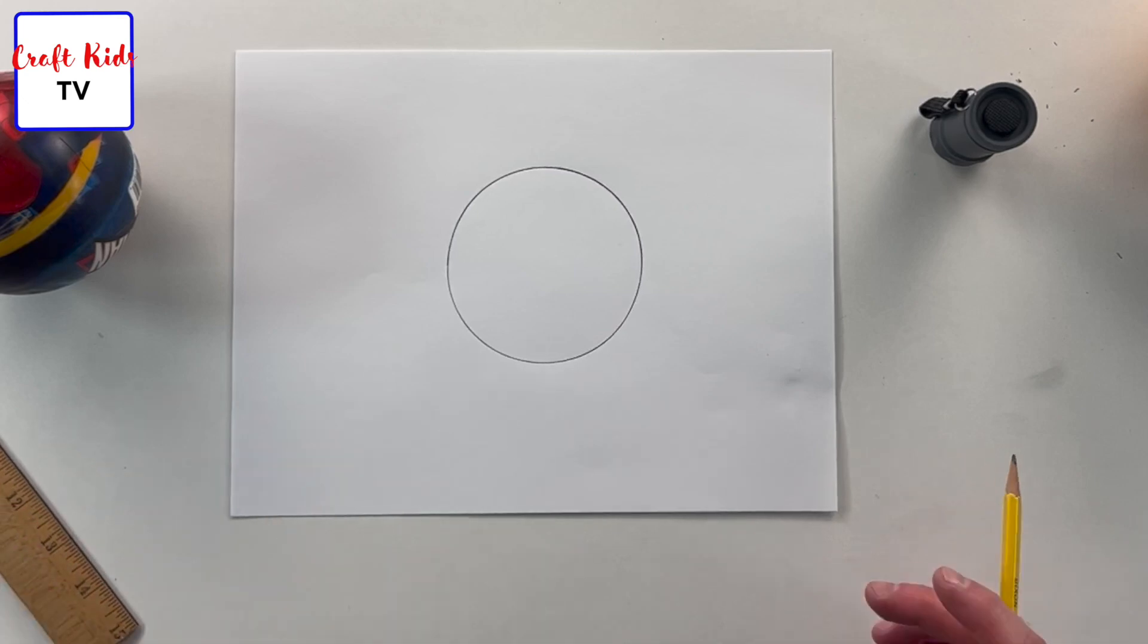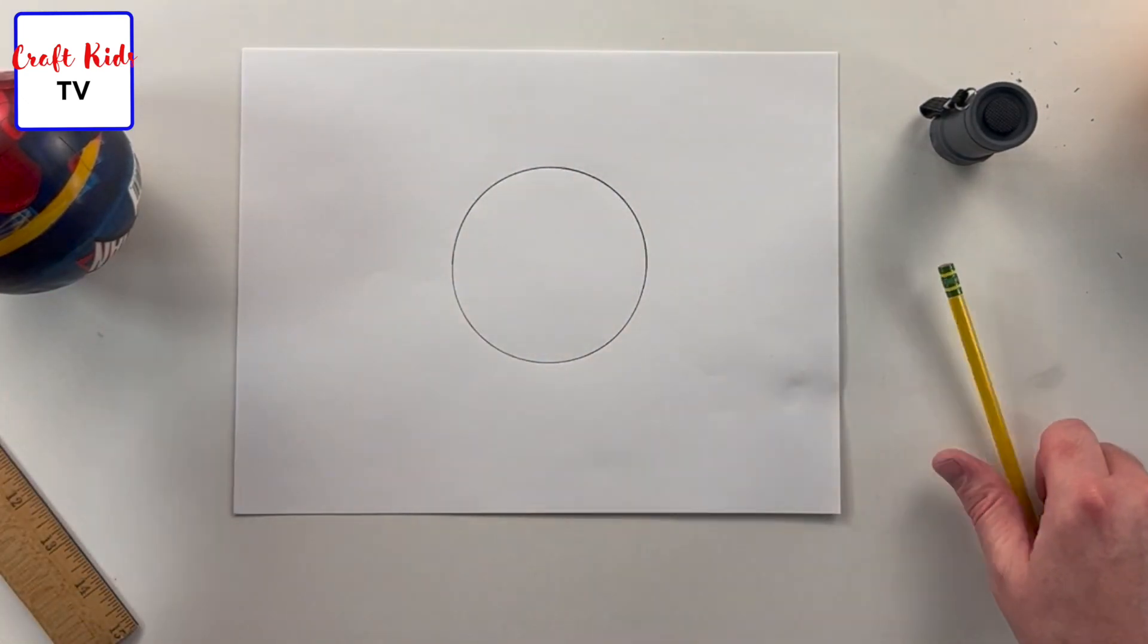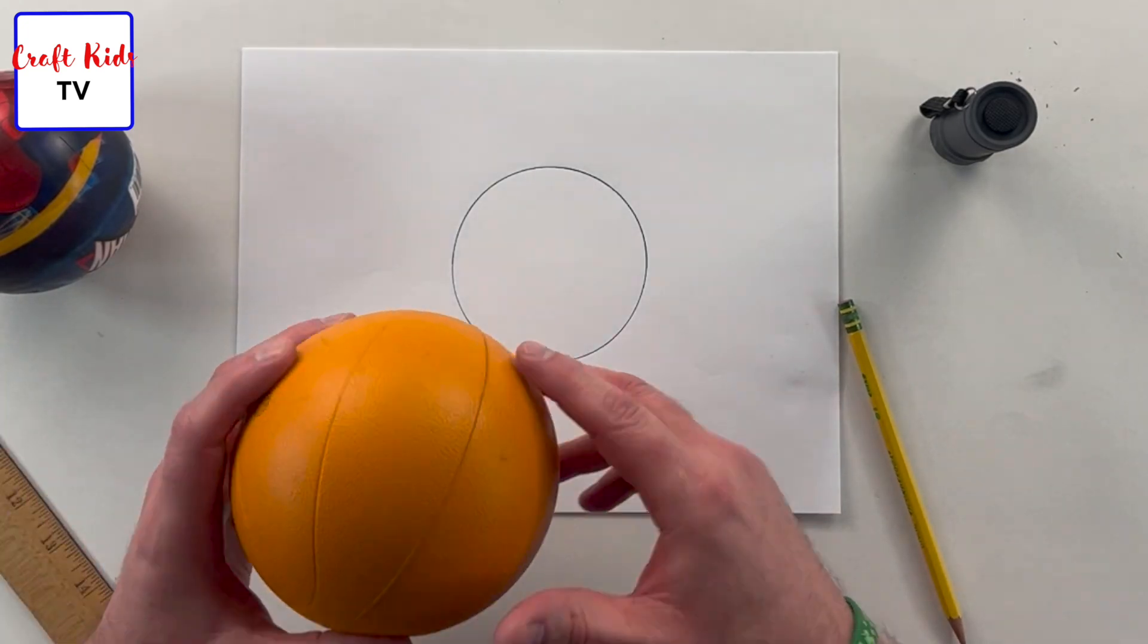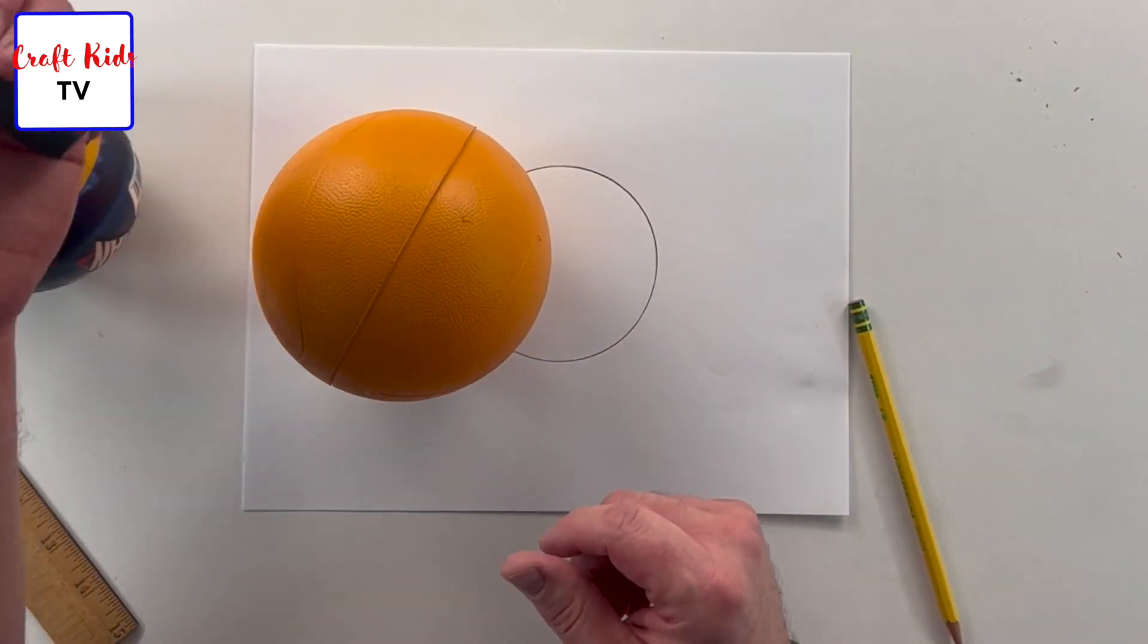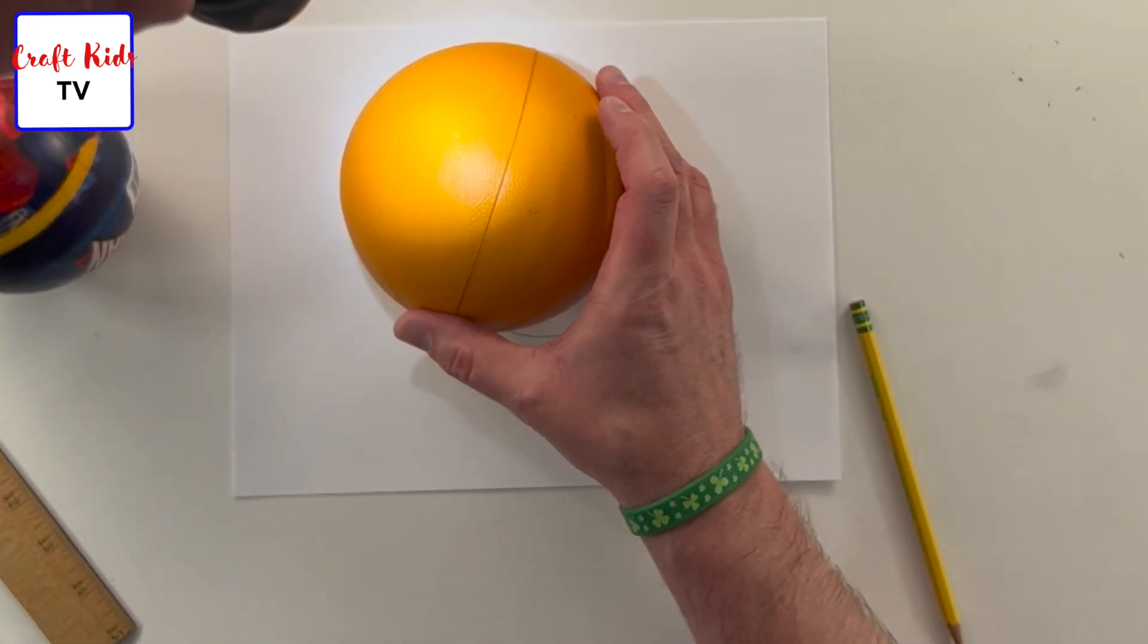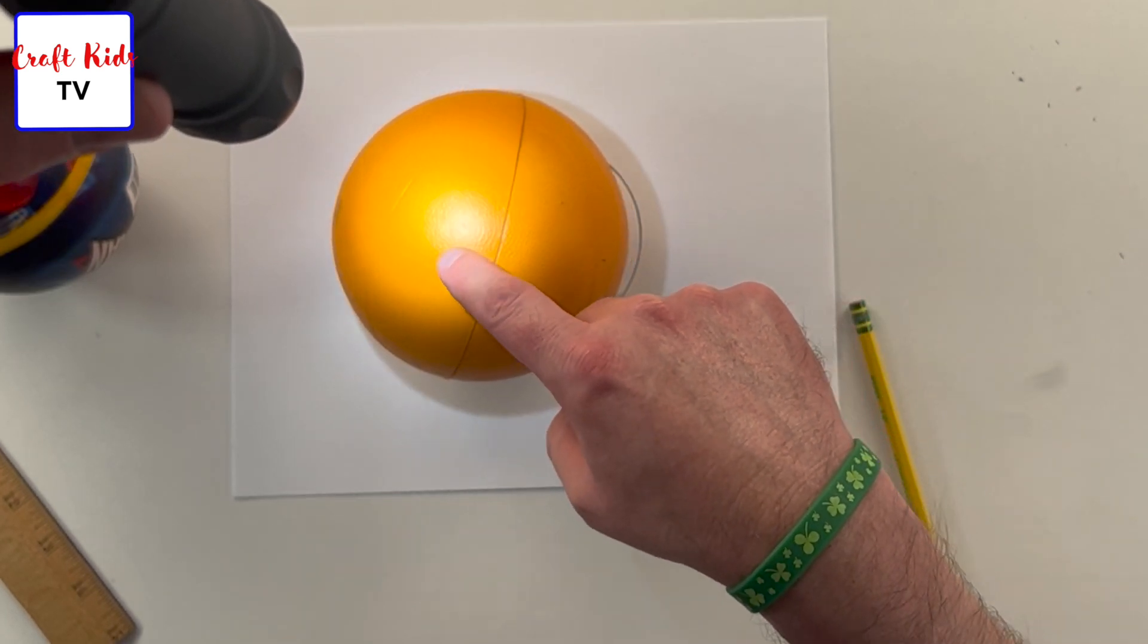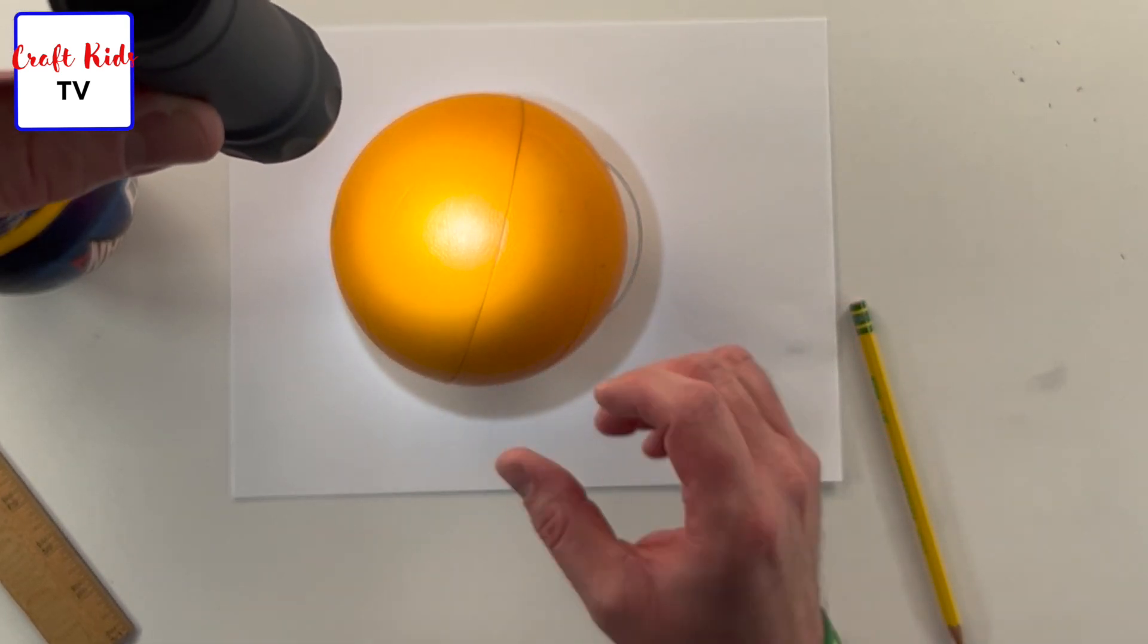All right, so we have our circle which we're going to shade to look like a sphere. I'm gonna give you an example using these balls and this flashlight. If we have light coming in from the top, you can see the very intense bright light right there in the center.